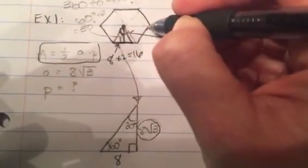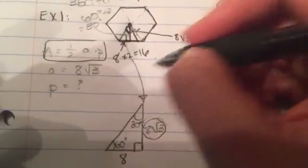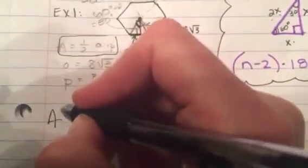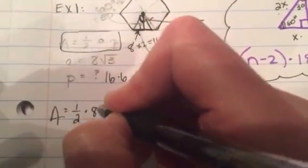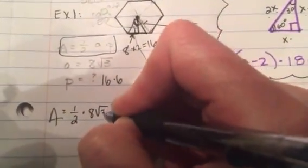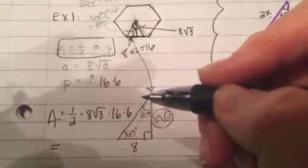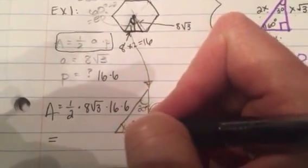So therefore, this side, this side, all these sides, there are 6 of them, that would be 16 times 6. So my perimeter is 16 times 6. And now I can calculate my area. I can do my area is equal to 1 half times 8 radical 3 times 16 times 6. And when we calculate that all together, you can use your calculator and you can figure that out.